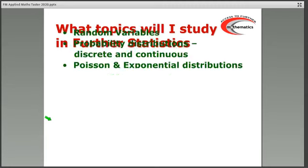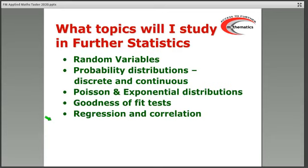First of all, the further statistics. This is a list of the topics in the WJEC AS-level further statistics, Unit 2. You will have met quite a bit of probability at GCSE. You will have met correlation at GCSE. Obviously, at the further maths level, it takes these topics into much greater depth.